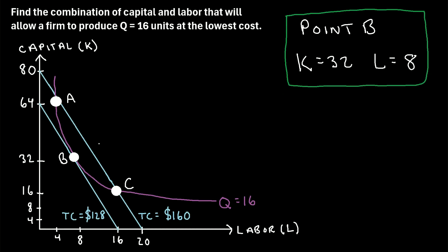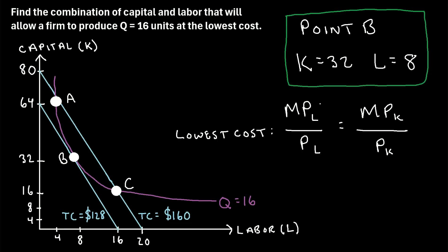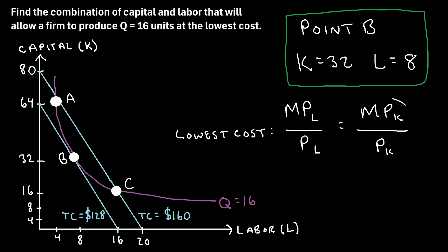Something important to understand mathematically is that the point allowing us to produce a certain quantity at the lowest cost is where the iso-cost line is tangent to the iso-quant line — that occurs at point B. Tangent means the two lines are touching but not intersecting. Mathematically, the lowest cost occurs where the marginal product of labor divided by the price of labor equals the marginal product of capital divided by the price of capital. This means the marginal product per dollar spent on labor equals the marginal product per dollar spent on capital.